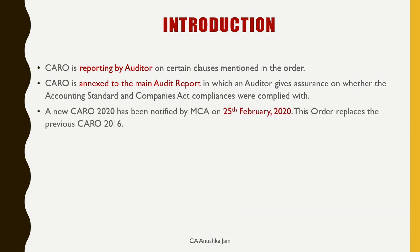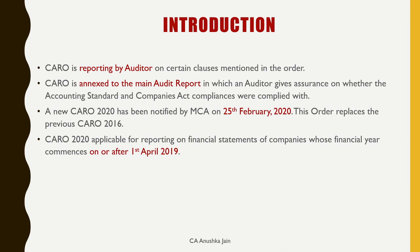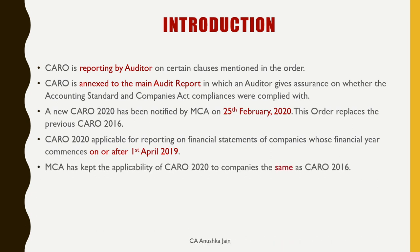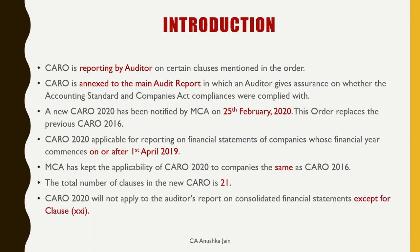MCA ne CARO 2020 ko 25th February 2020 ko notify kiya. Isne CARO 2016 ko supersede kiya hai. It is applicable for reporting on financial statements of companies whose financial year commences on or after 1st April 2019. Its applicability to companies has been kept same as CARO 2016. The total number of clauses in the new CARO is 21. CARO 2020 will not apply to the auditor's report on consolidated financial statements except for clause 21.